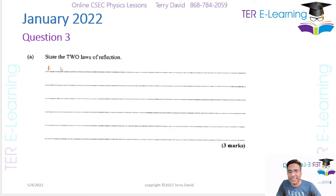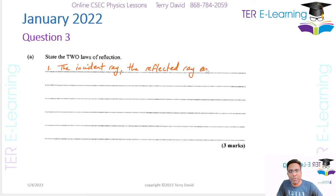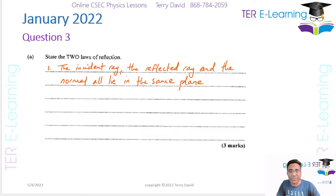So the first law: the incident ray, the reflected ray, and the normal all lie in the same plane. This is one of our laws of reflection — don't mix this up with refraction, this is reflection. The second law is: the angle of incidence is equal to the angle of reflection.